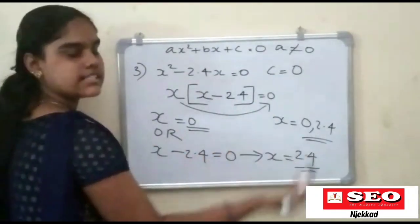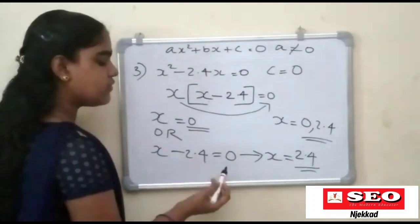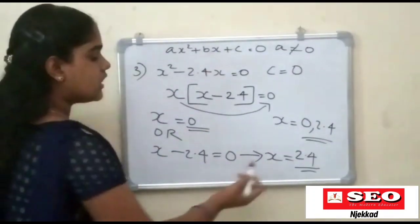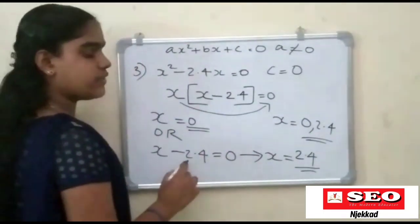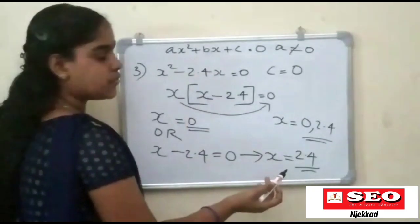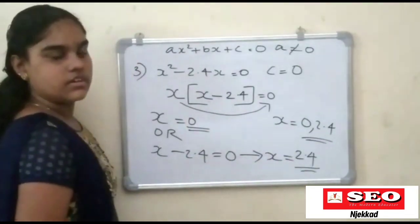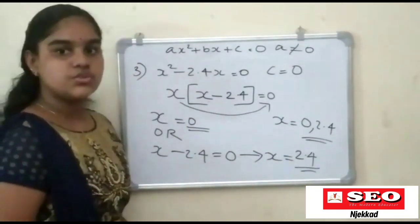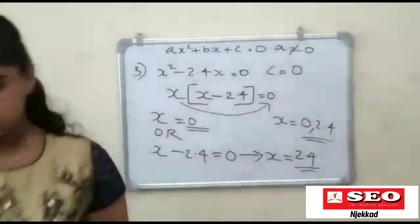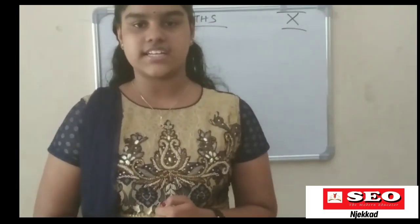Therefore x is equal to zero. Or x minus 2.4 is equal to zero. Therefore x is equal to 2.4. So the solution is x equals zero or x equals 2.4. We have done this solution. Thank you.